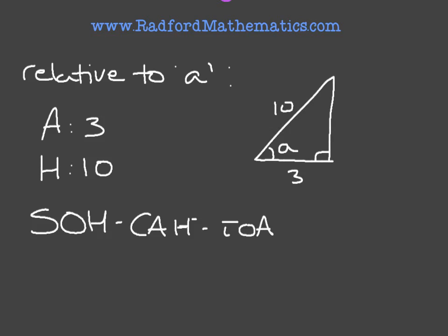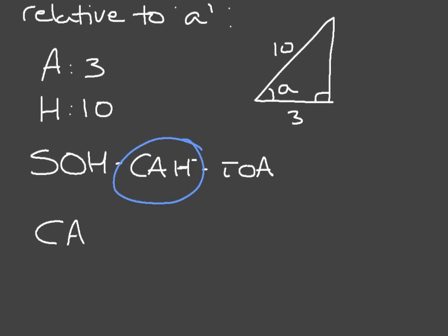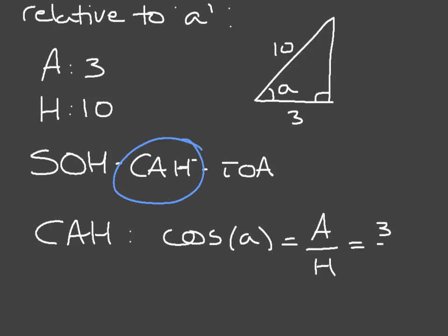We ask ourselves which of those three parts of SOHCAHTOA has both A and H inside them. Looking at this, the only one with both A and H is CAH. This means we'll be using CAH, which tells us that the cosine of the angle we're interested in — in this case A — is equal to adjacent divided by the hypotenuse. Since the adjacent is 3 and the hypotenuse is 10, cosine of A equals 3 over 10, which is 0.3.